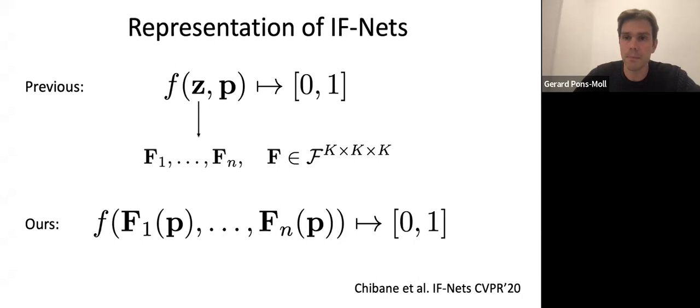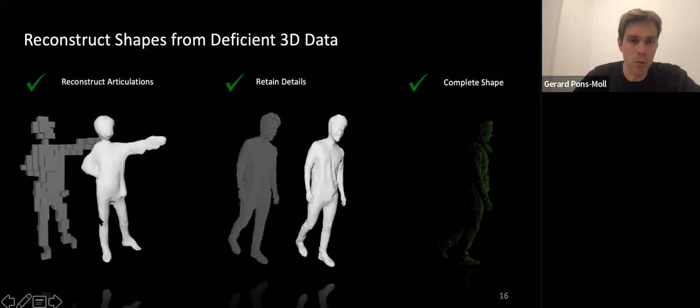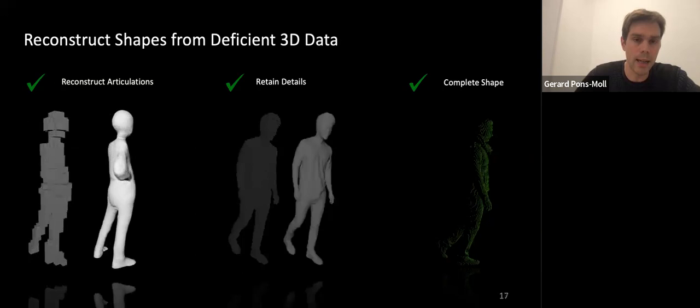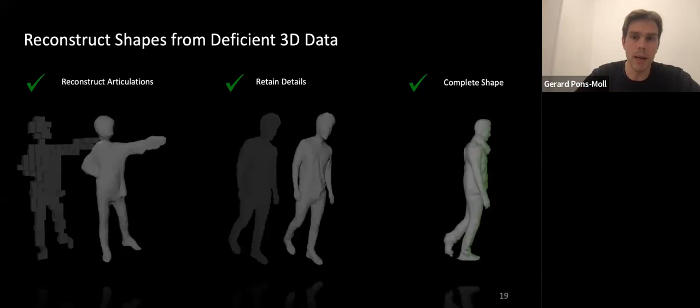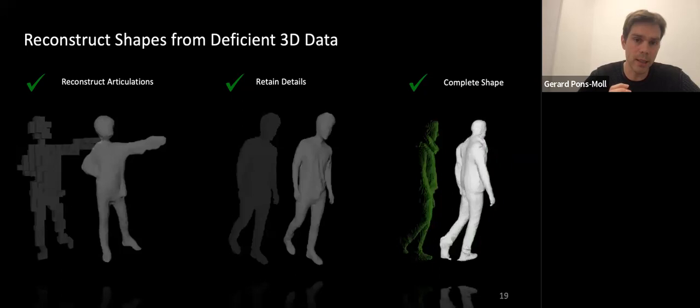We tried it to reconstruct humans from different modalities — from low-resolution voxels, high-resolution voxels, and also to complete shapes from partial point clouds. The green dots are basically coming from a depth map and we can reconstruct the occluded part of the depth map. What we notice is that this architecture allows us to recover detail when it's present in the input and recover something reasonable for the occluded part.